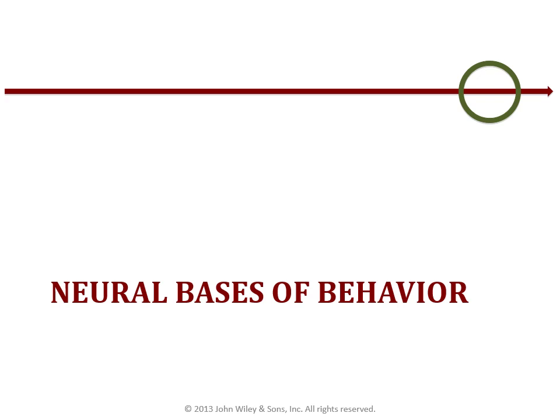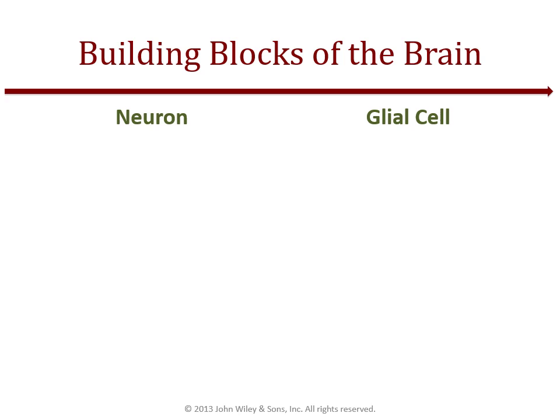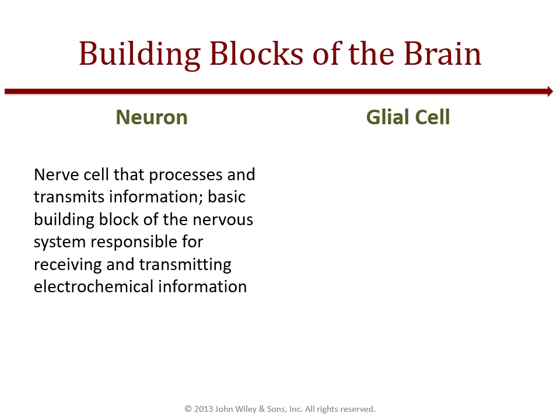We're going to discuss the neural basis of behavior. When we talk about 'neural,' we're talking about the brain's foundation — those building blocks of the brain. The rest of the nervous system essentially consists of neurons, each one a tiny information system that processes thousands of connections, receiving as well as sending electrochemical signals to other neurons within your brain.